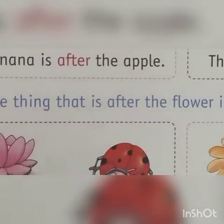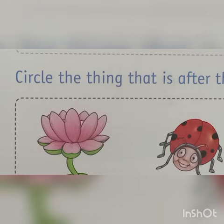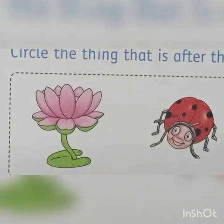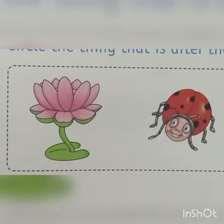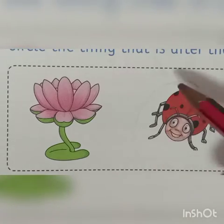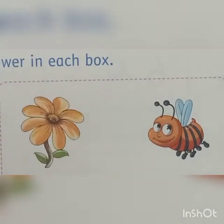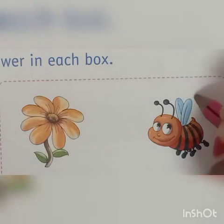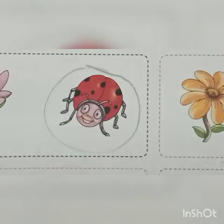Here on the second circle, think about the things that are after the flower and circle them in the box. Now you have to circle — you can see the red pearl is after the flower, so circle this picture. Next you can see there is a honey bee after the flower, so you are going to circle this picture as well.